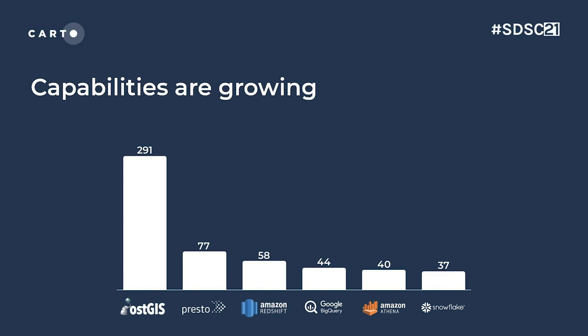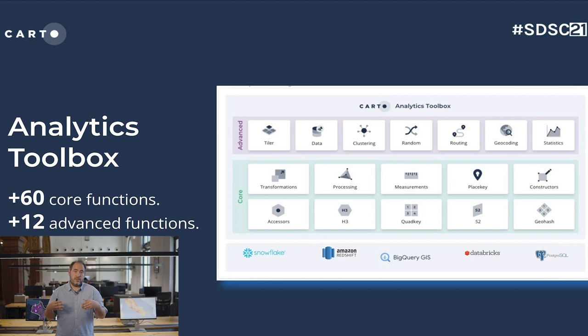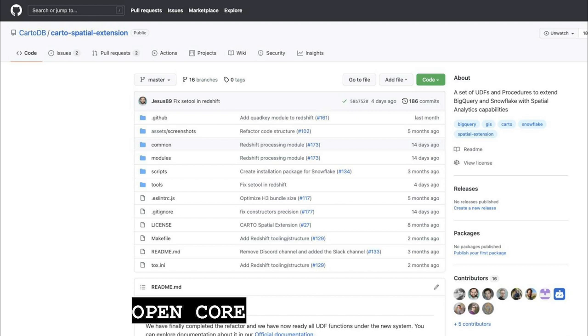For those capabilities not yet available, Carto has developed what we call the Analytics Toolbox, which provides many of the capabilities you find in PostGIS but not yet available in these other systems — and it's all available in SQL. The actual foundation of the Analytics Toolbox, with a large number of functions, is released as open source by Carto. I invite you to check it out.